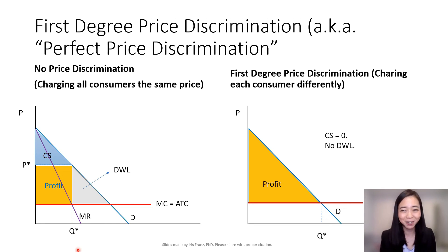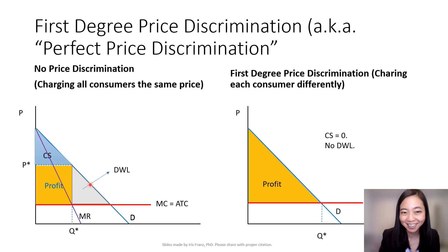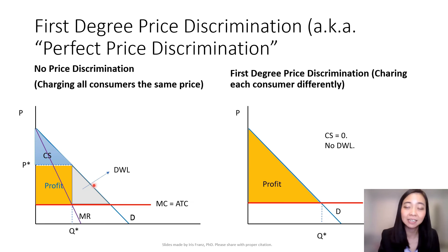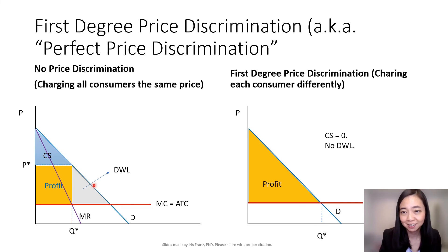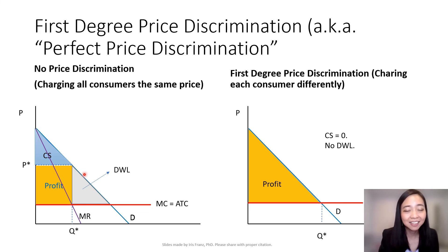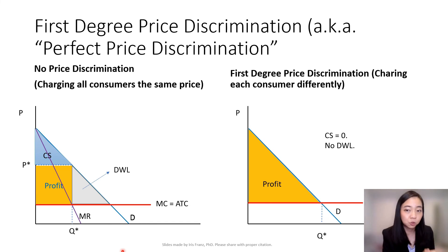And we have a deadweight loss. Why is that? Because according to the demand curve, there is someone whose willingness to pay is higher than the marginal cost of producing that good, but lower than the price — so this person is not going to buy the product. That transaction is lost, and that's the reason why we have a deadweight loss. So with no price discrimination, we have a deadweight loss.